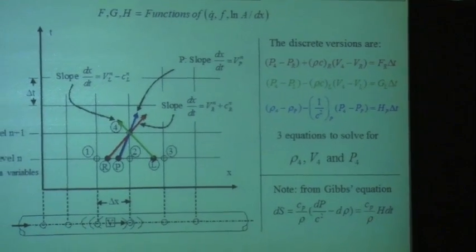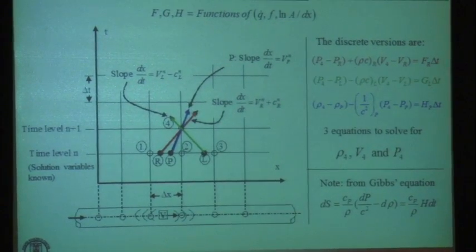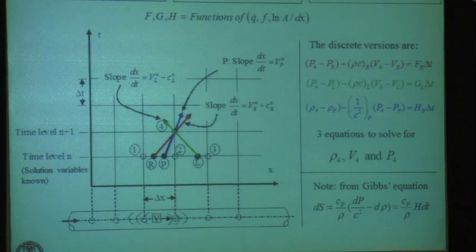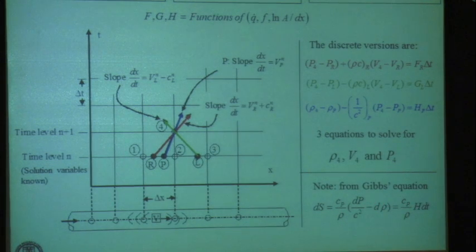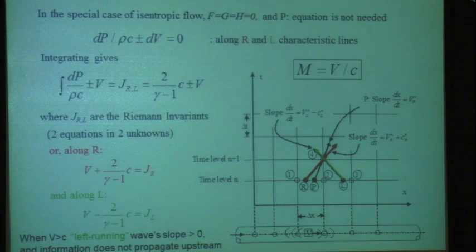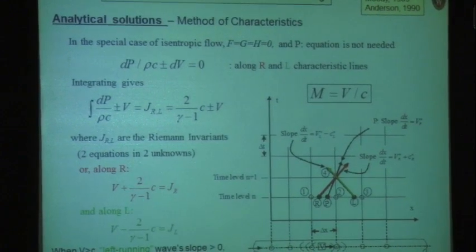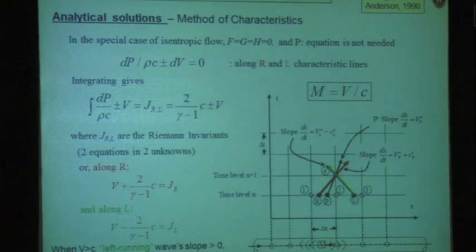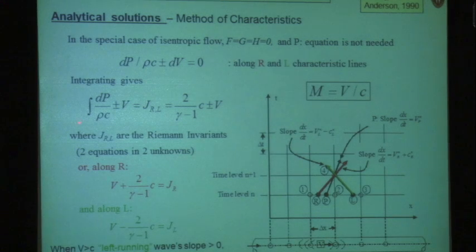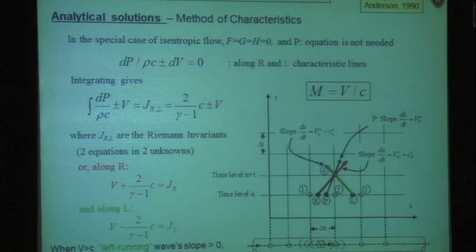These source terms are zero for isentropic flow — flow without heat addition or friction. From Gibbs's equation, the entropy change is basically dp/c² minus d-rho, so h equals zero when ds equals zero. In the isentropic limit you can show that along characteristic lines dp/(rho*c) plus the change in velocity equals zero — this is called the Riemann invariant. Integrating gives: 2/(γ−1) times the sound speed plus or minus the velocity is constant along each characteristic line.